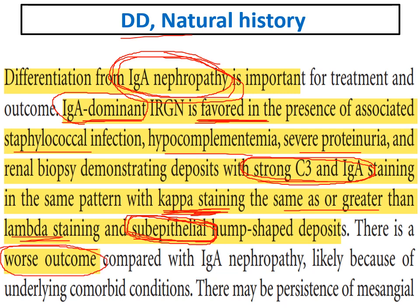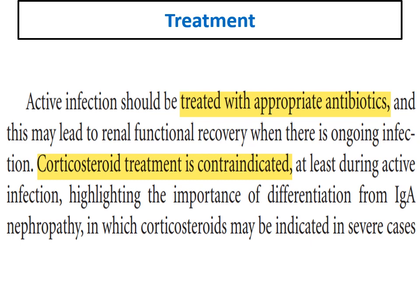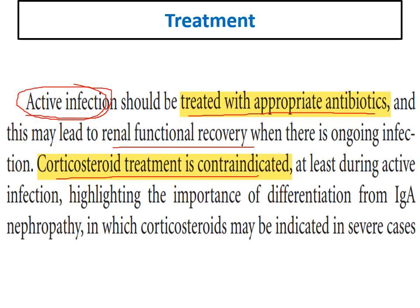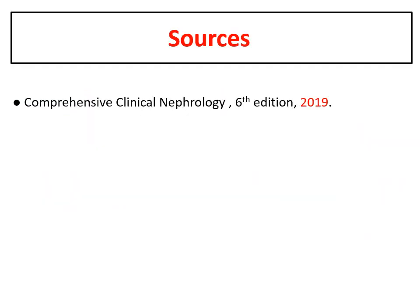Treatment is directed mainly against the infection. Active infection should be treated with appropriate and aggressive antibiotic therapy, which can lead to renal recovery. Corticosteroids are contraindicated during active infection and should not be given, especially in the presence of active infection. This is why it is critical to differentiate IgA dominant infection-related GN from IgA nephropathy — steroids may be given in IgA nephropathy in severe cases, but not here during active disease.